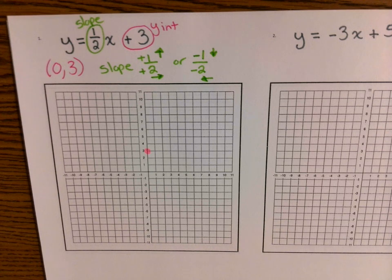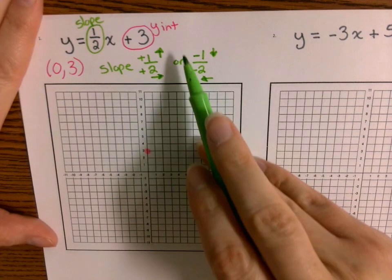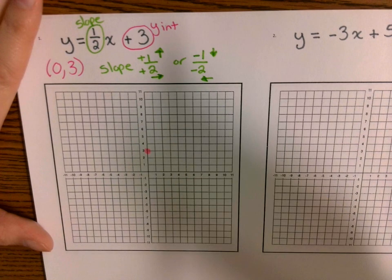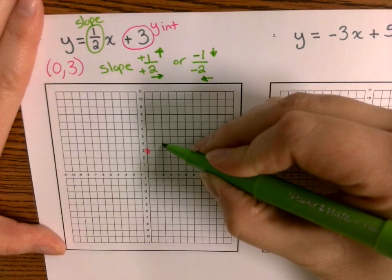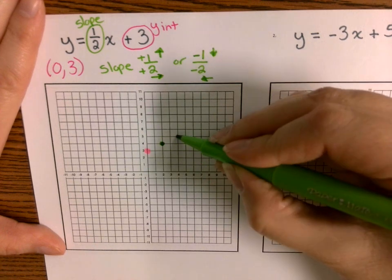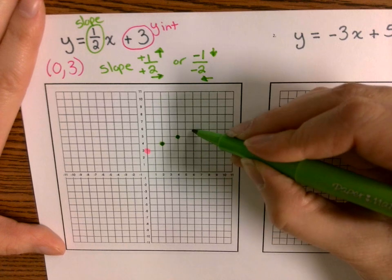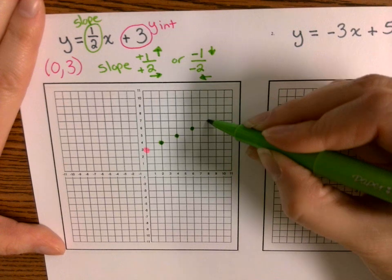I'm going to plot as much as I can going up and to the right. Up one, right two takes me to the point (2, 4). Then up one, right two takes me to (4, 5). Up one, right two takes me to (6, 6). Up one, right two takes me to (8, 7). And up one, right two takes me to (10, 8). I can't go any further because I don't have any more grid on that side.